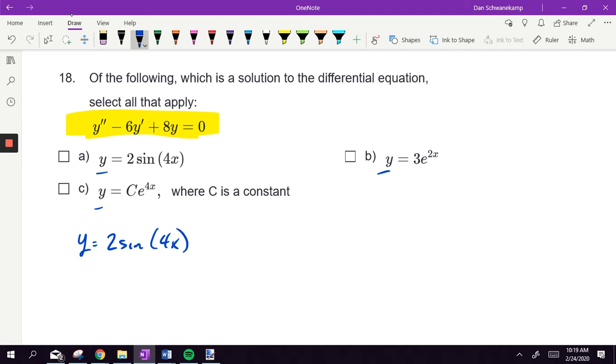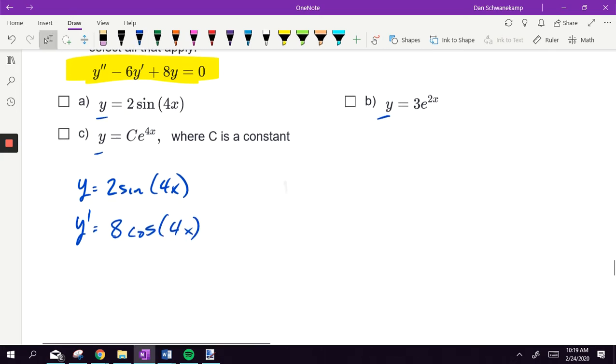For example, I've got y equals 2 sine of 4x. So if I found y prime, that would be 8 cosine 4x if you know how to do chain rule with your derivatives. And y double prime would be negative 32 sine 4x, negative because the derivative cosine is negative sine. Once I've done it, then I'm going to plug it into this equation again.